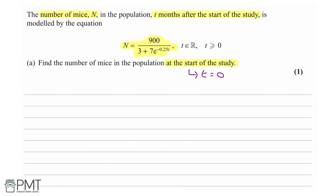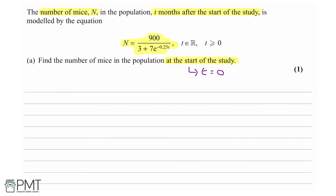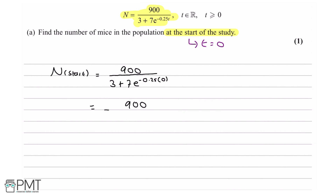We need to plug in t equals 0 into our equation. So n at start equals 900 over (3 plus 7e to the minus 0.25 times 0). e to the power of 0 equals 1, so we get 3 plus 7 times 1 which is 10. So 900 over 10 equals 90. You get 1 mark for getting a starting population of 90.